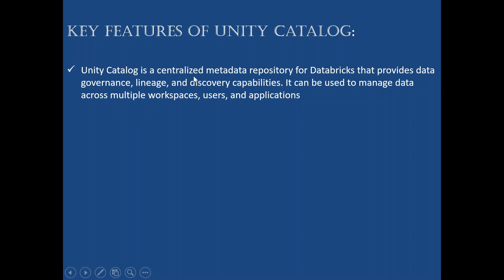Unity Catalog is a centralized metadata repository for Databricks that provides data governance, lineage, and discovery capabilities. Centralized means one place — data about data — stored for the database, which helps to define data governance rules: what rules the data has to follow, the dependency between tables, and how quickly we can identify data through discovery capabilities by giving tags.